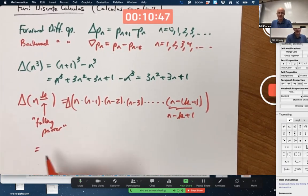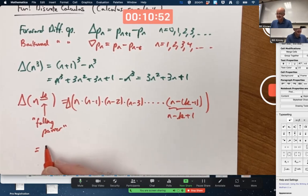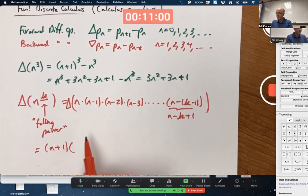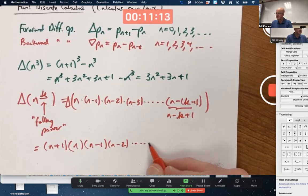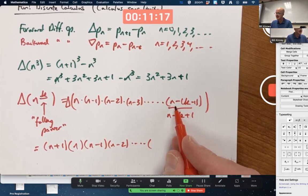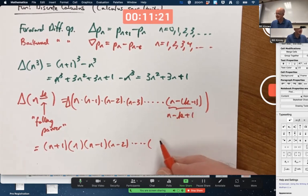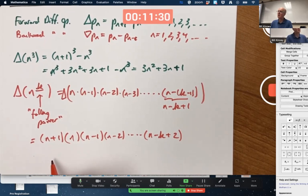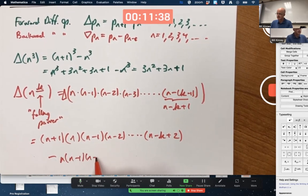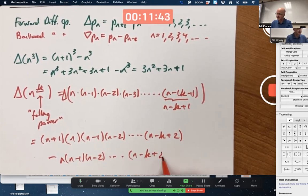I want to compute delta of this thing. What would that be? Well, use the definition of delta, the forward difference operator. Here, I guess you'd get, replace all those N's with N+1's. N+1, (N+1)-1 is just N, (N+1)-2 is N-1, (N+1)-3 is N-2, dot dot dot. I guess the last one would be, replace N with N+1, I get (N+1)-K+1, that's N-K+2. That would be (N+1) to the falling K power. I need to subtract N to the falling K power.